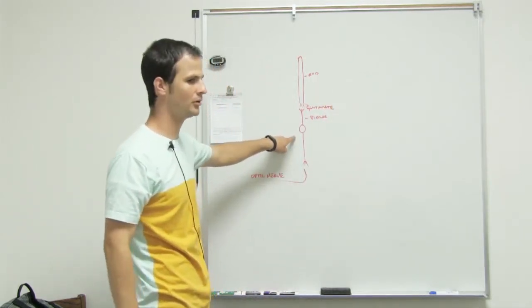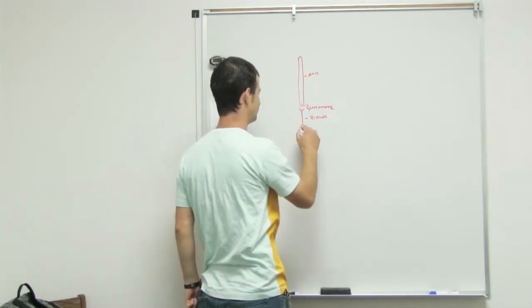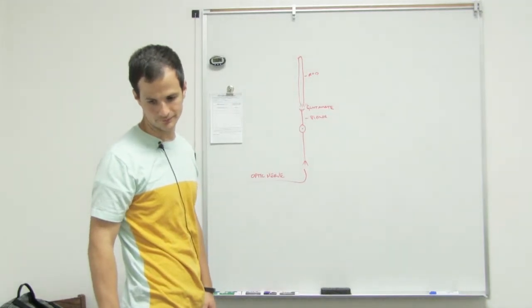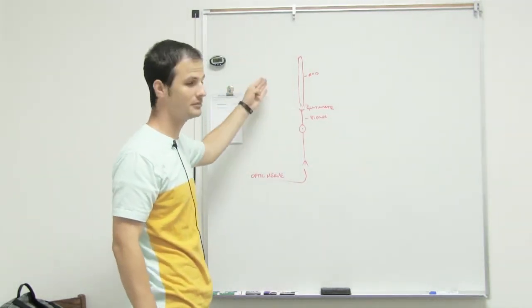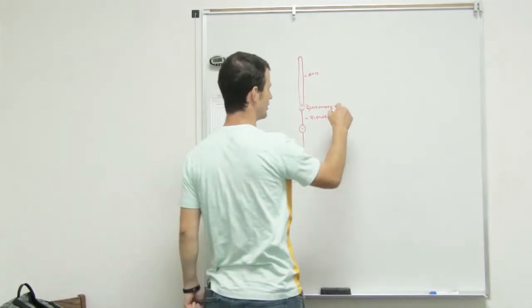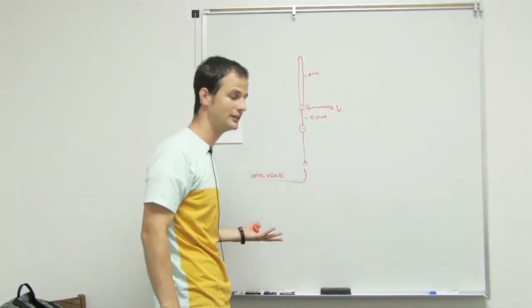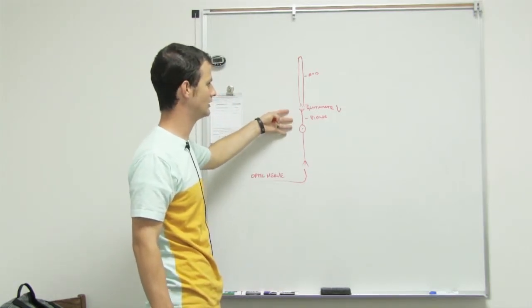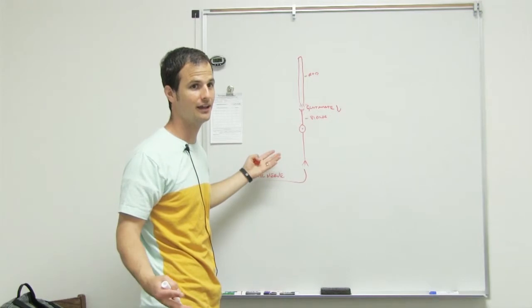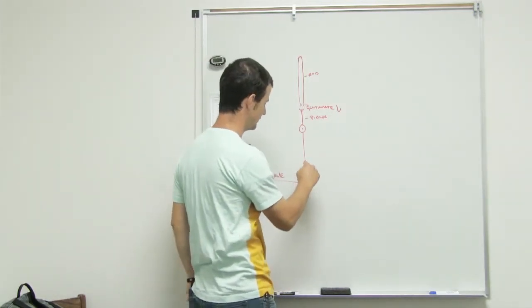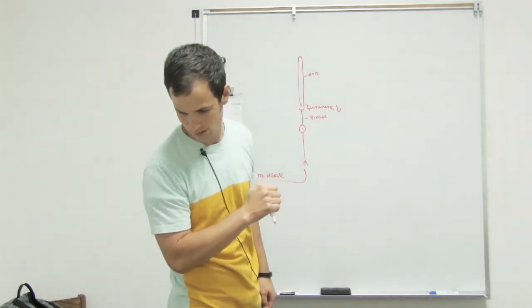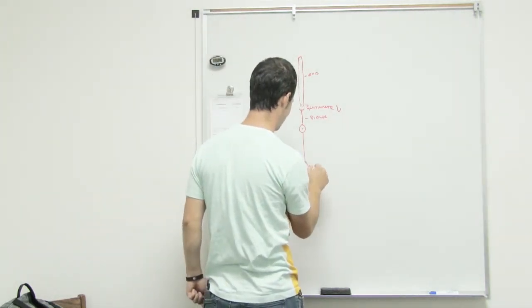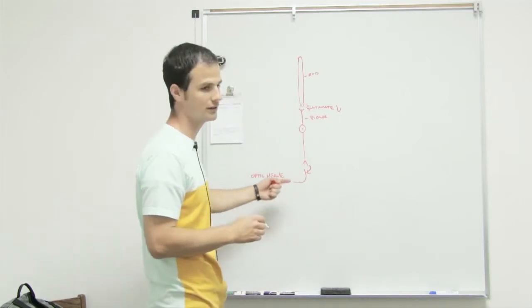it inhibits the bipolar cell from firing, basically. So when the rod is stimulated, it causes a drop in glutamate release by the rod, which helps the bipolar cell to then fire and send—I think it's acetylcholine, whatever, I don't know what it is—but it sends a signal to the optic nerve and...